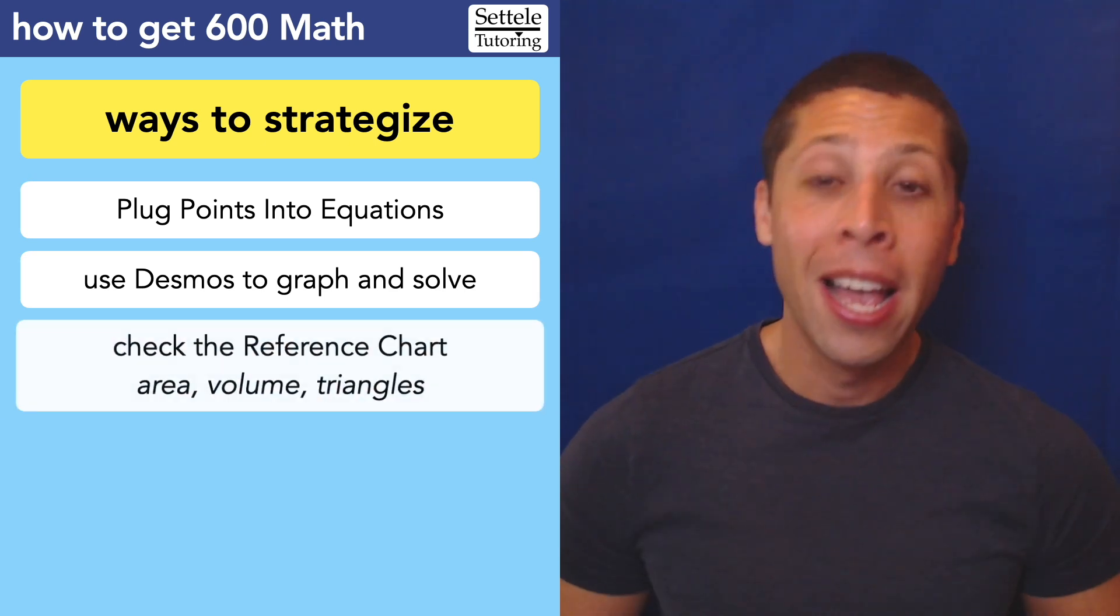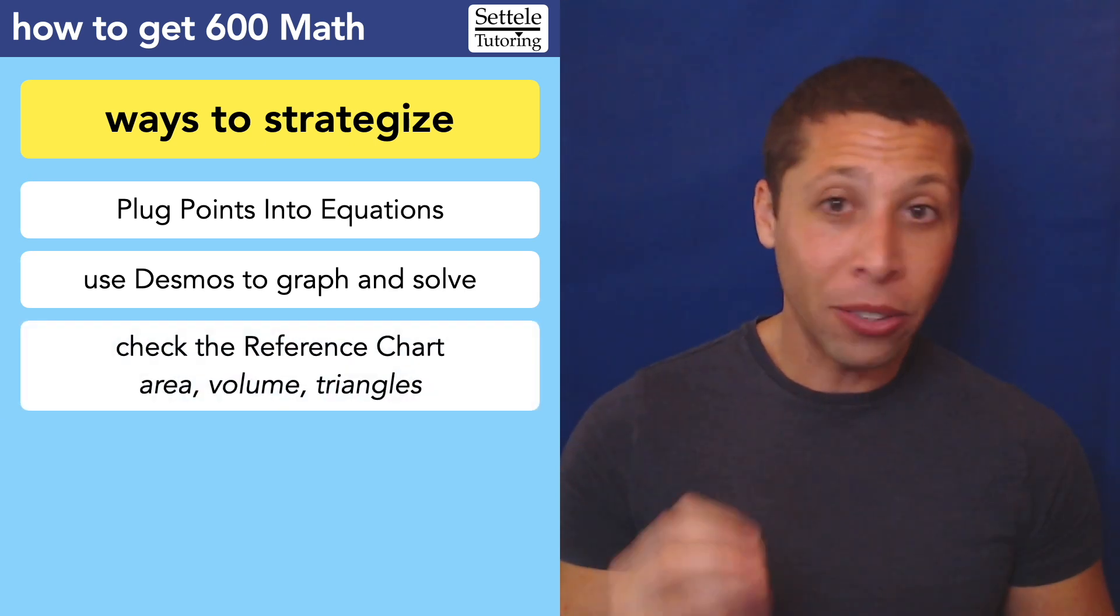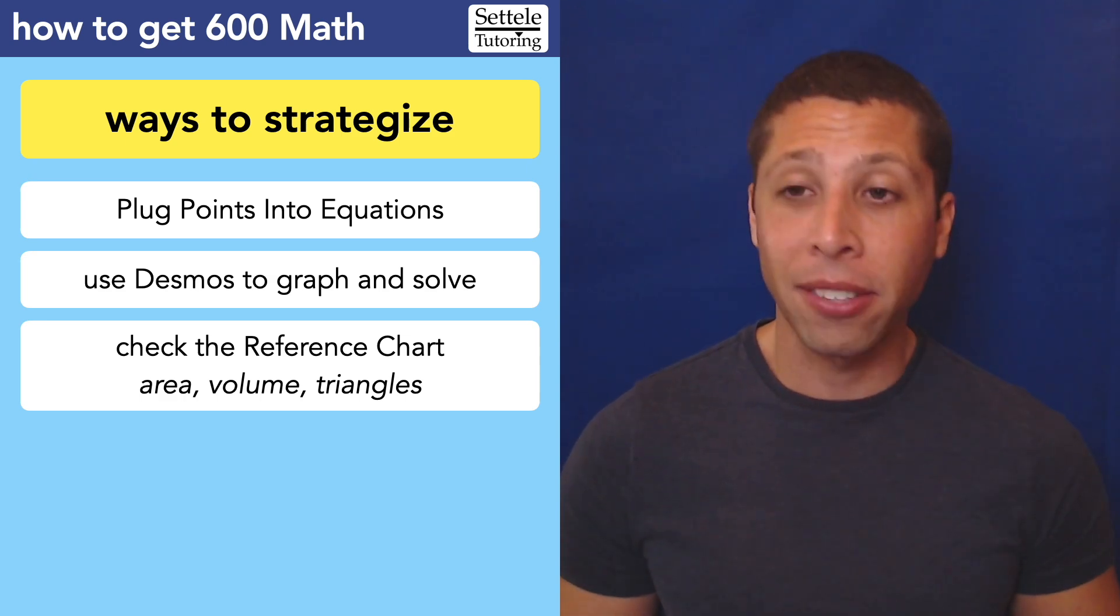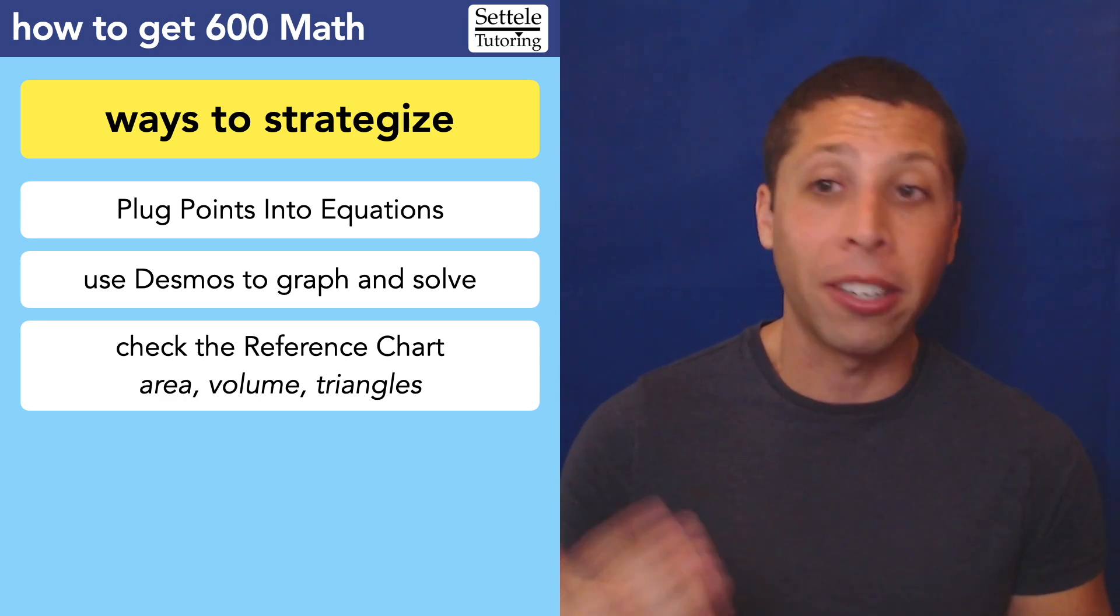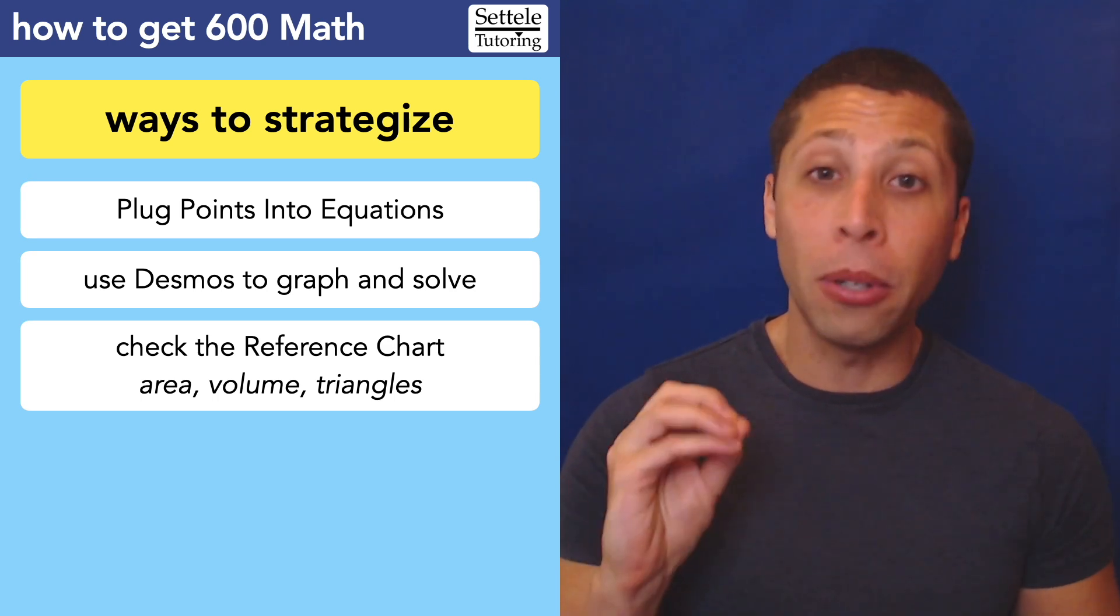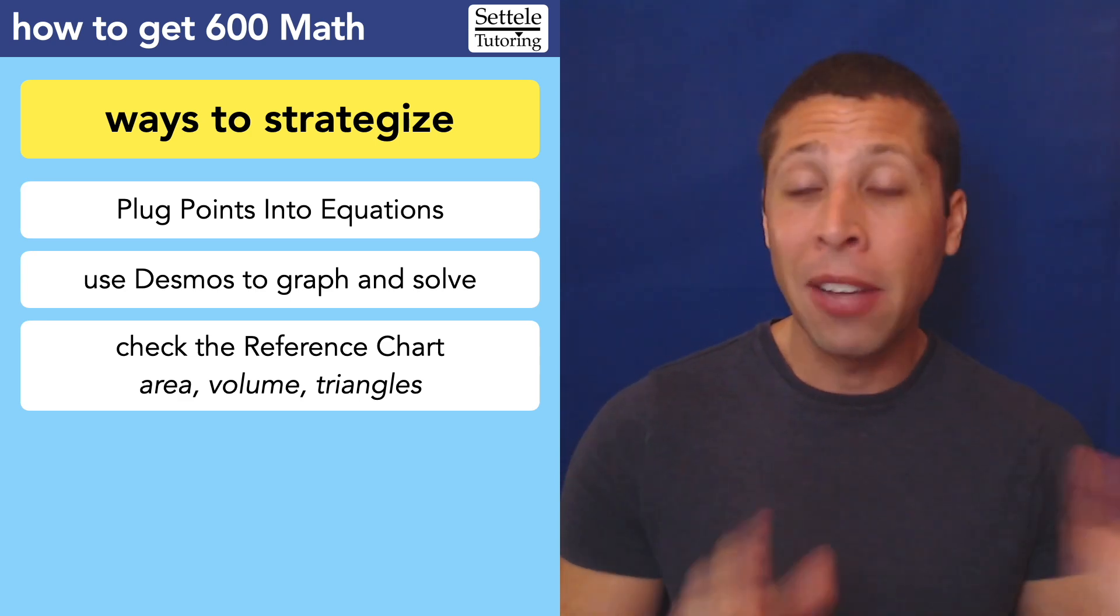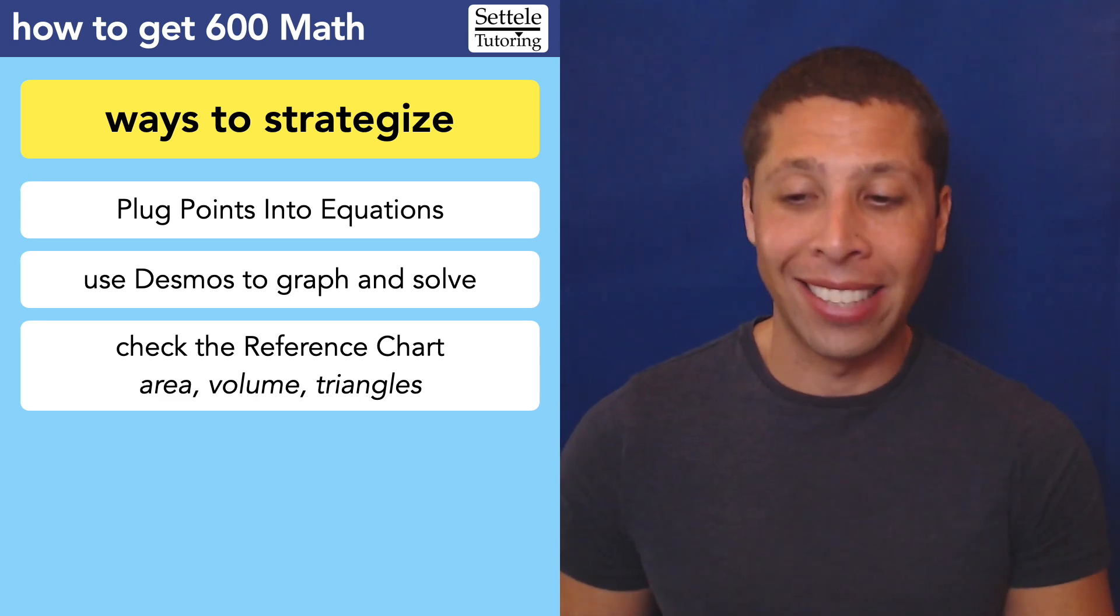As far as geometry goes, I know a lot of people hate geometry, but remember there's a built-in reference chart on every SAT math section that gives you the formulas for area, volume, triangles, things like that. So, if you just know that exists, you'll be able to get some of the most simple, fundamental geometry questions right. You might have to skip some of the hard stuff, but that's okay if you just want to get a 600.